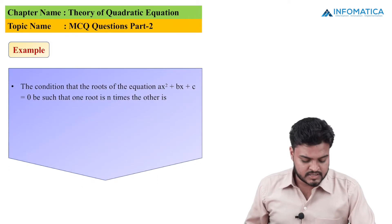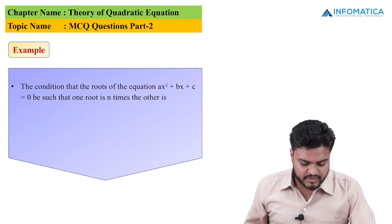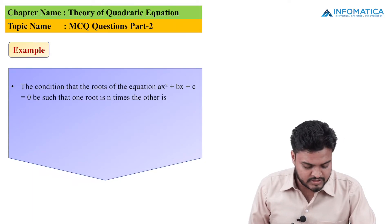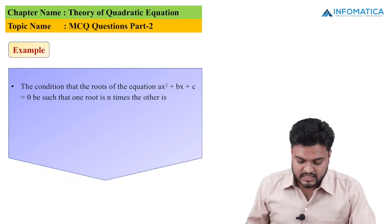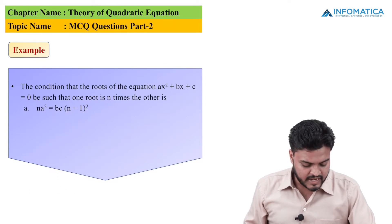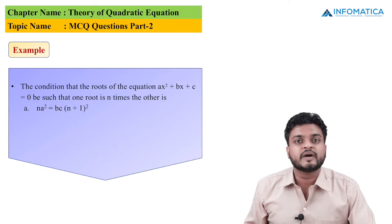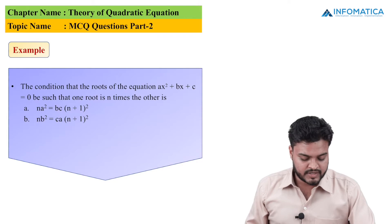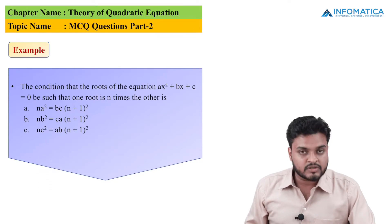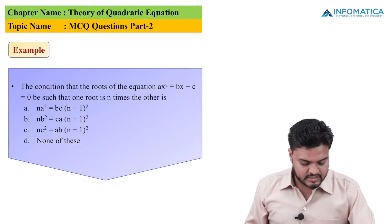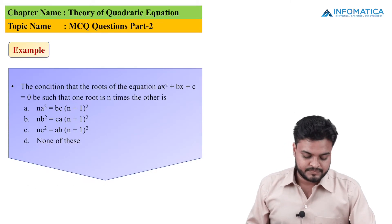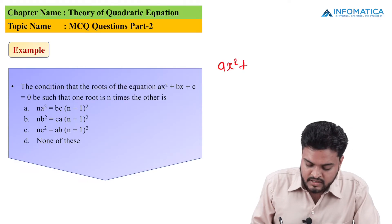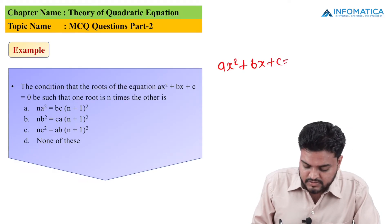Next question: The condition for the roots of ax² + bx + c = 0 to be such that one root is n times the other. Options: (a) na² = bc(n+1)²; (b) nb² = ac(n+1)²; (c) nc² = ab(n+1)²; (d) none of the above.